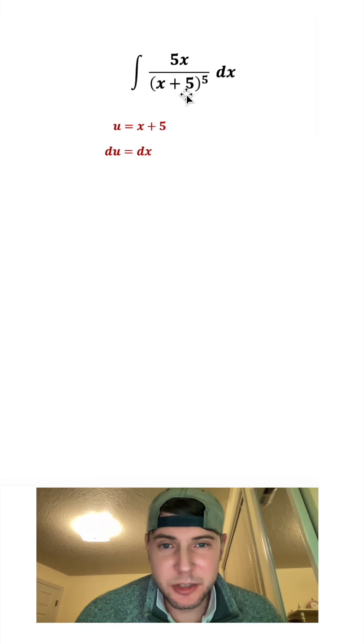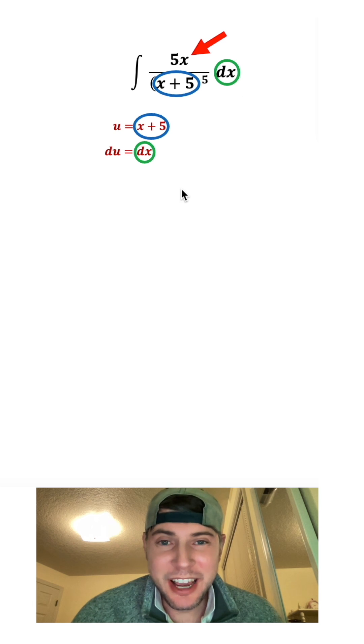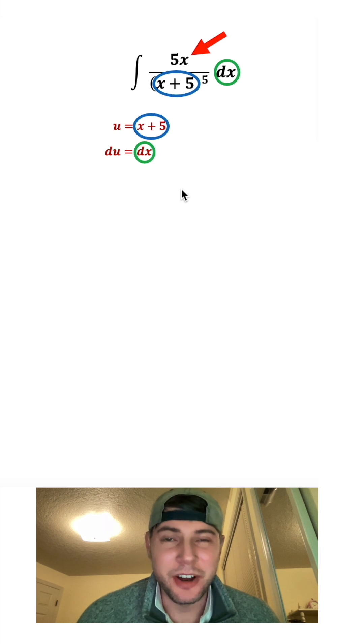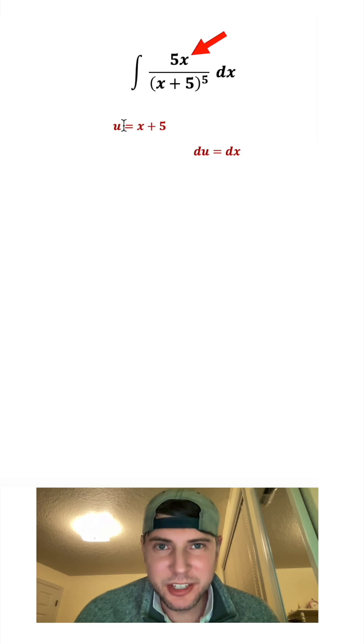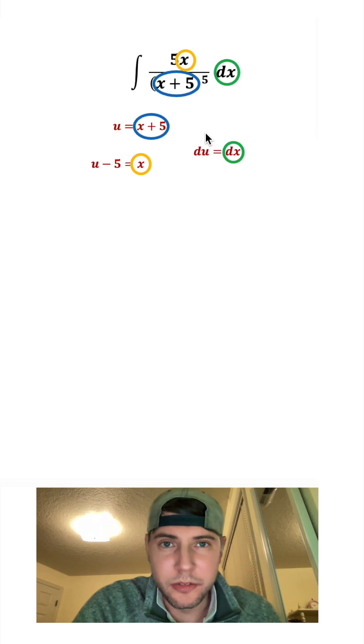So now we have substitutions for the x plus 5 and the dx, but we haven't accounted for this last x yet. But that's fine, we can do this. Let's scoot this stuff over here and get rid of all of our circles. And then looking at this equation right here, if we subtract 5 from both sides, we have u minus 5 equals x. And now we have substitutions for all of our x's.